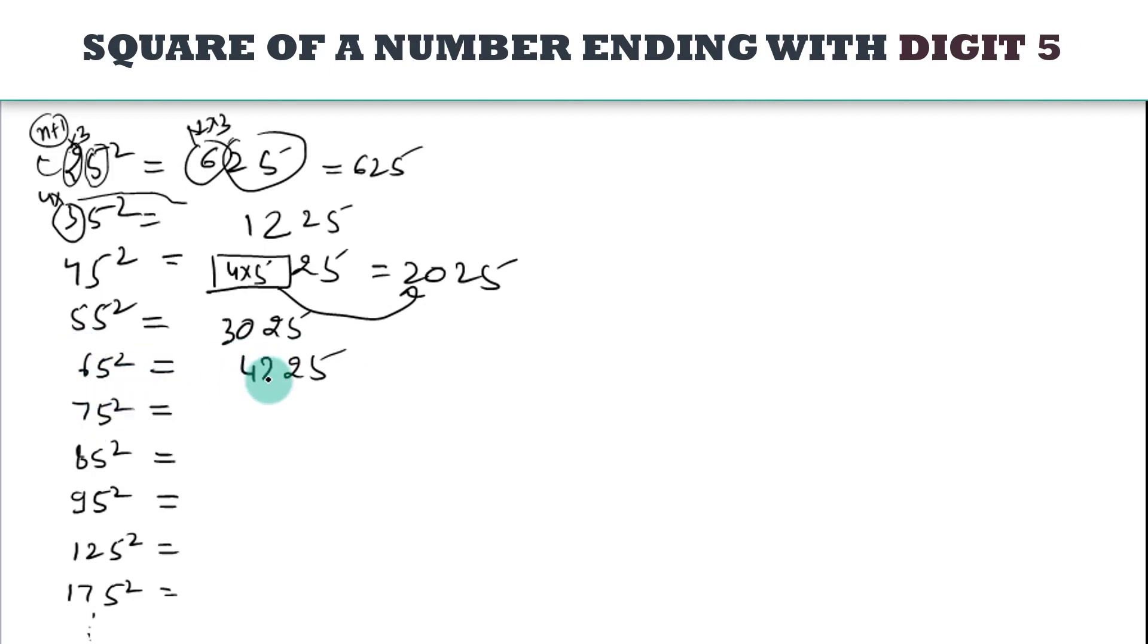42, 4225. 75, you will get 25 again, 7 plus 1 is 8, 8 times 7? 56, 5625 is the square.